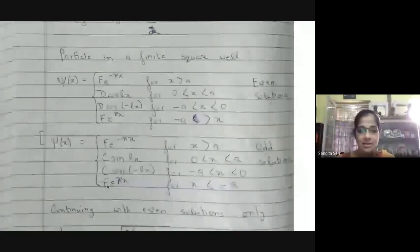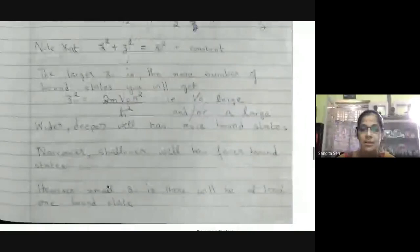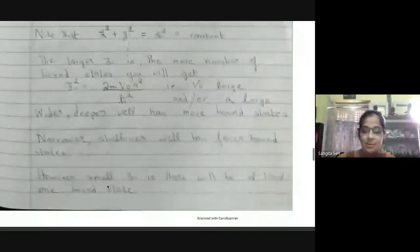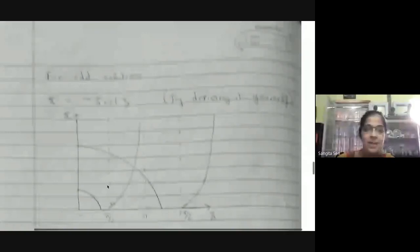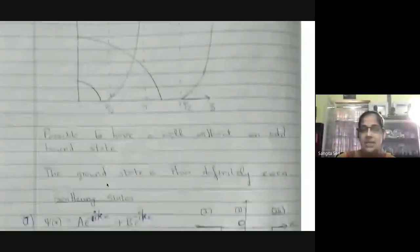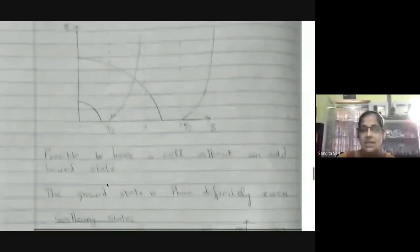That finishes the solution for the finite square well for the bound states. We saw that it will have at least one bound state, which is even, and the odd states. We started with the even states. Now the other part of the solution for the finite square well potential is the scattering states.